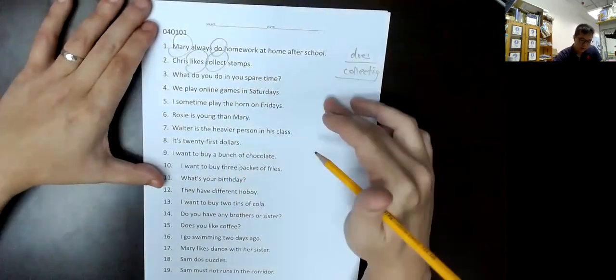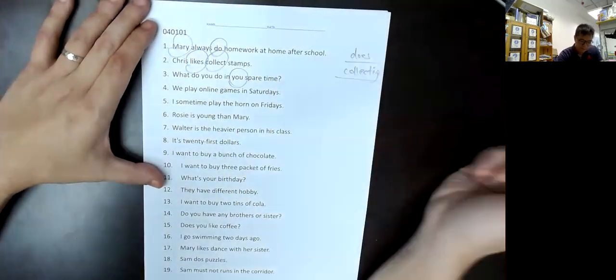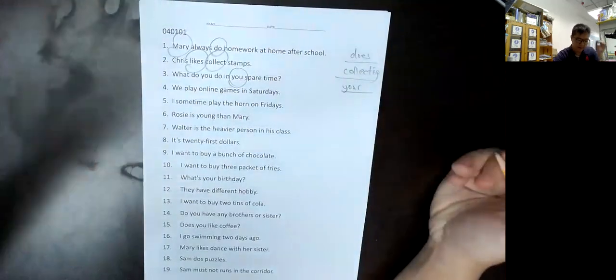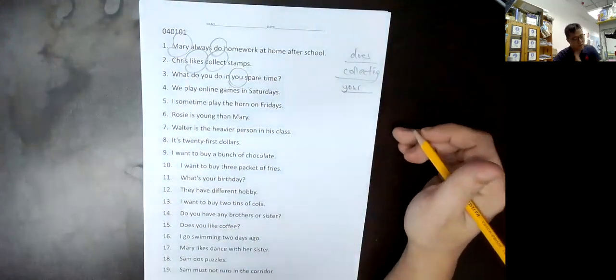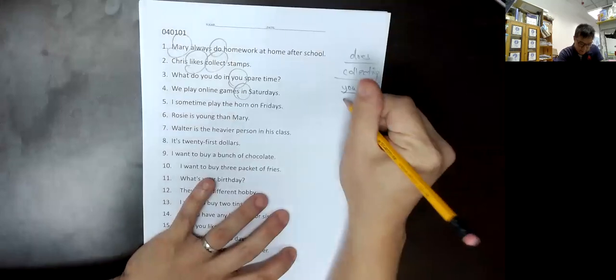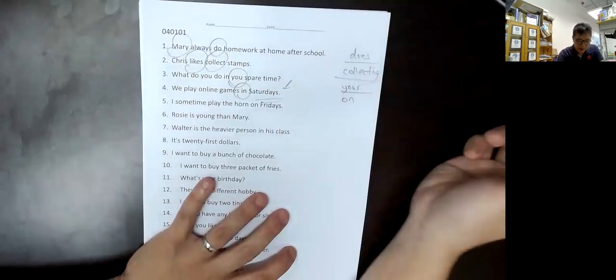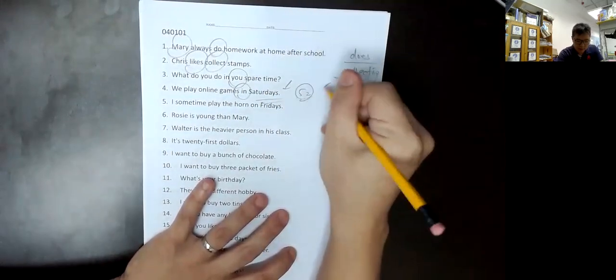When you have time, you can do what? Your spare time. Question 4. It is only on Saturdays, why do you have a S? Because one year has 52 weeks. So, the week 1-1 can be a S. No problem.